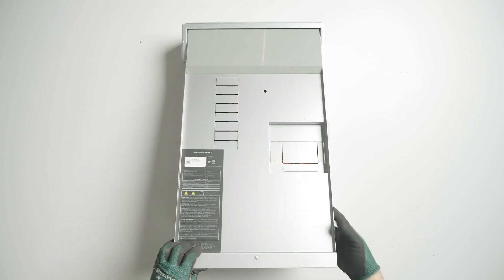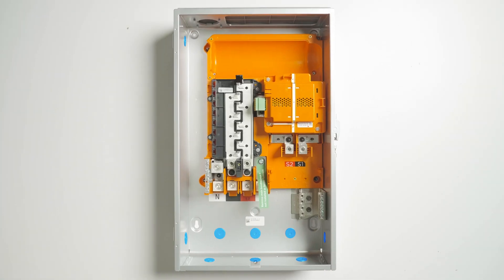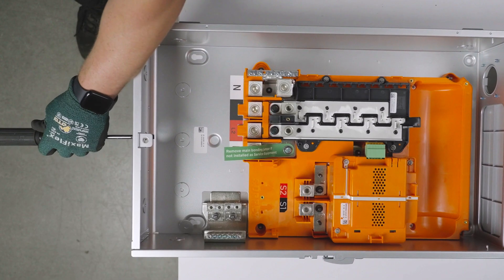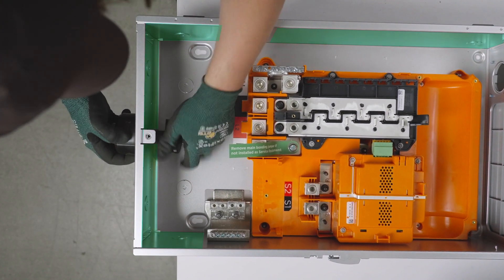Before mounting the enclosure, remove the dead front and make the required conduit entrance knockouts. These knockouts can be expanded to accommodate larger conduit, or new knockouts can be made in this area.